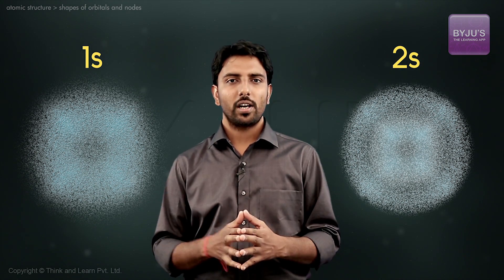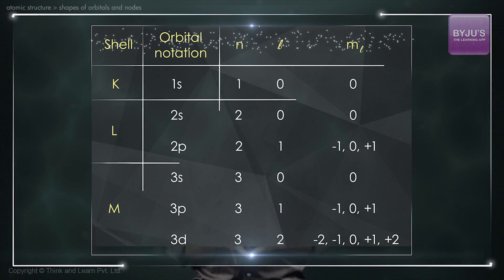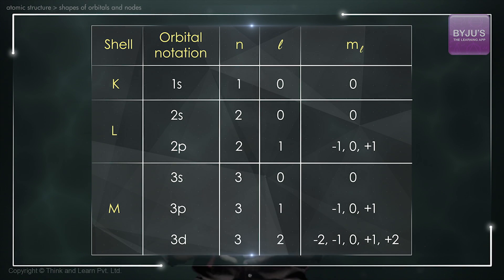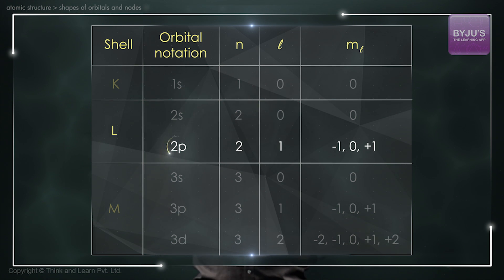To start with, let us bring in a table which describes the different quantum numbers. Observe the 2p orbital where n equals 2 and l equals 1. The three different ml values suggest that there are three different orientations for the orbitals within the p subshell.